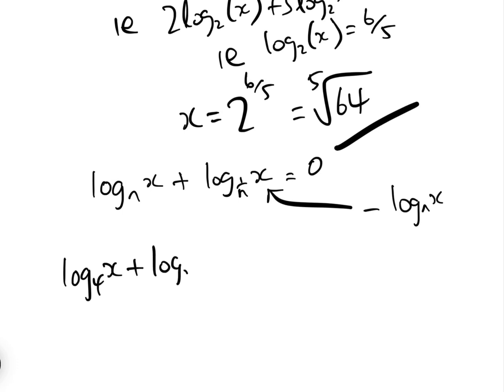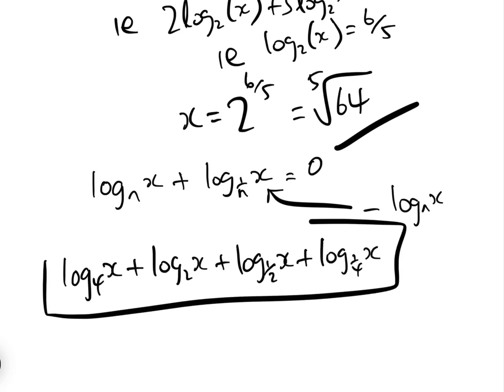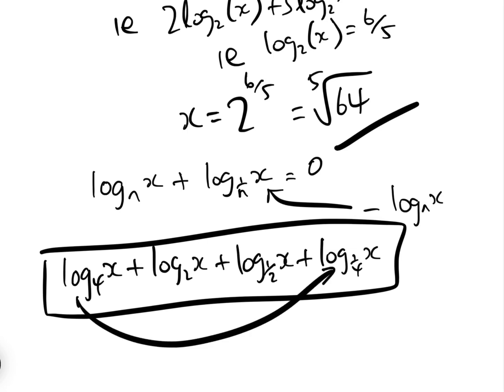In fact, I saw an olympiad problem which asked to simplify: log base four of x, plus log base two of x, plus log base half of x, plus log base quarter of x. Of course it equals zero, because log base four and log base quarter cancel, and log base two and log base half cancel. If you found this interesting, please like this video and subscribe to the Grassy Academy YouTube channel.